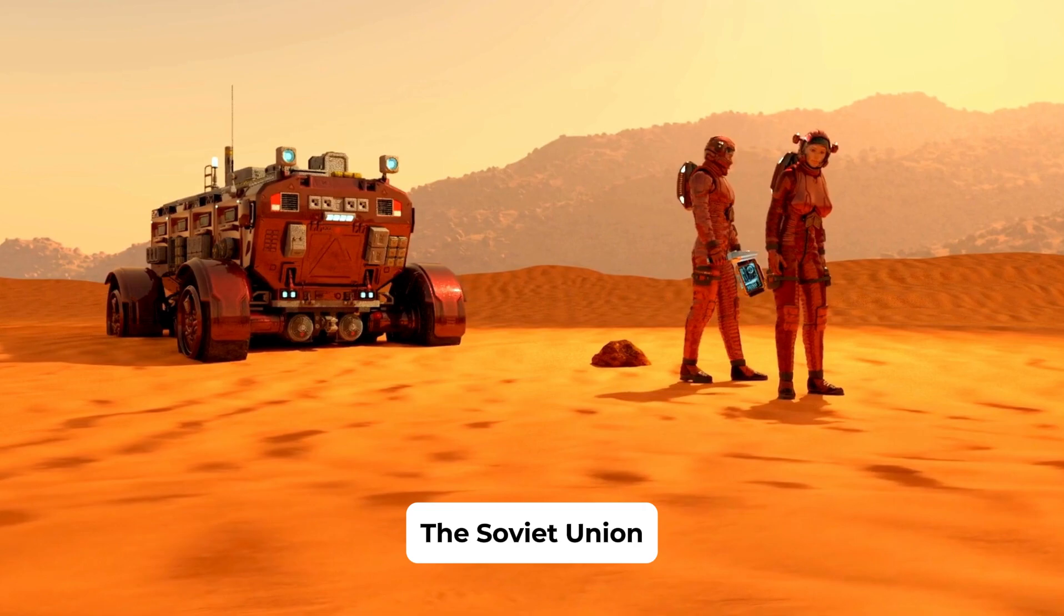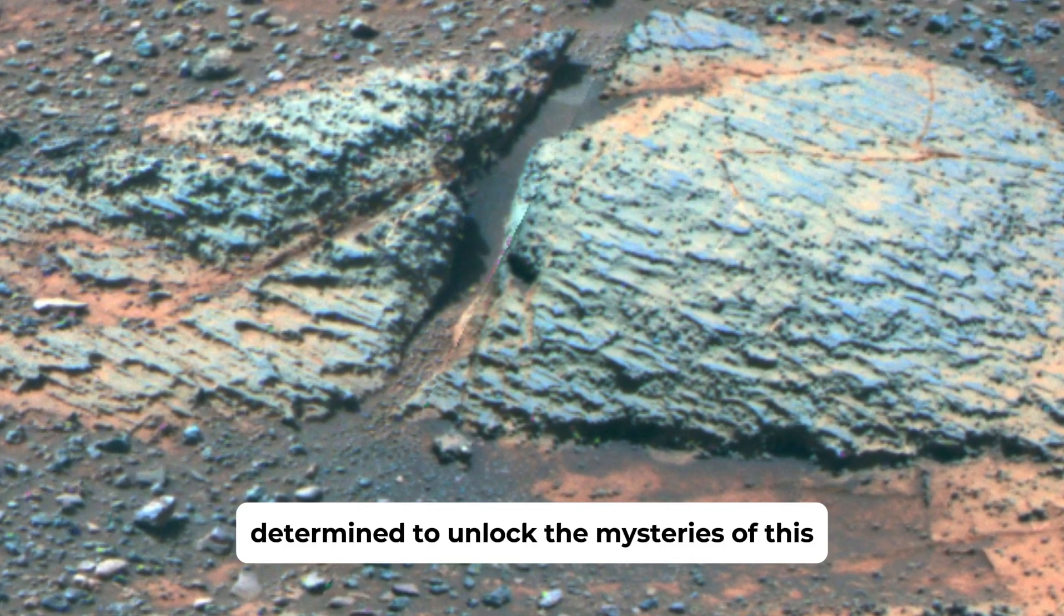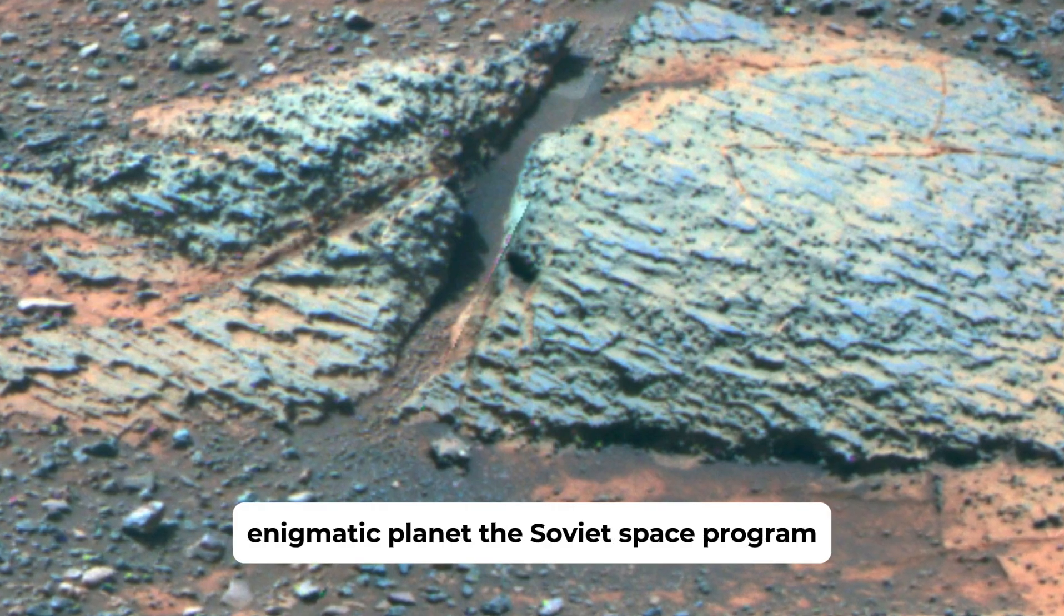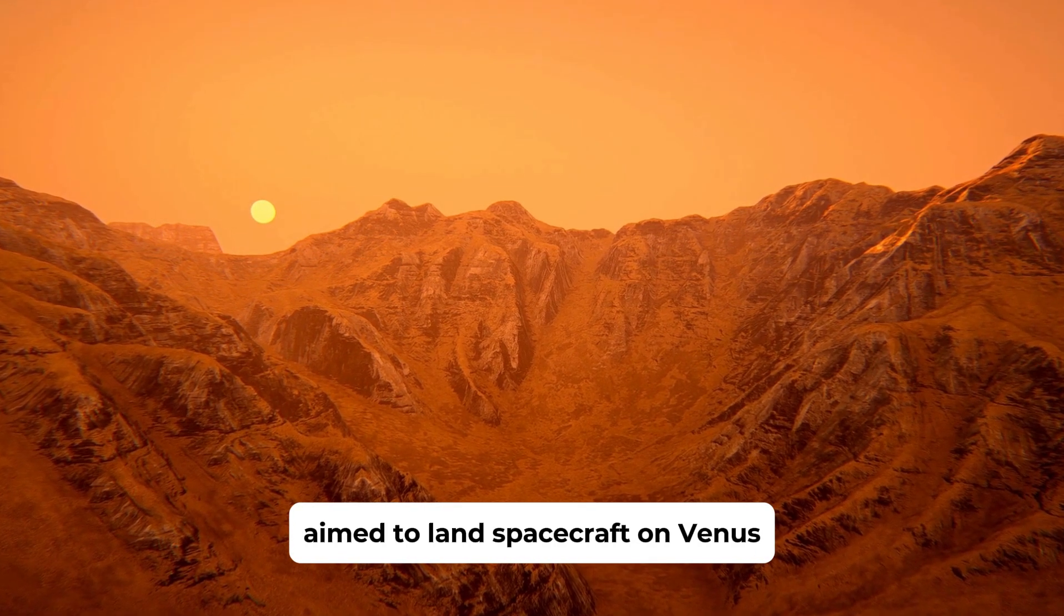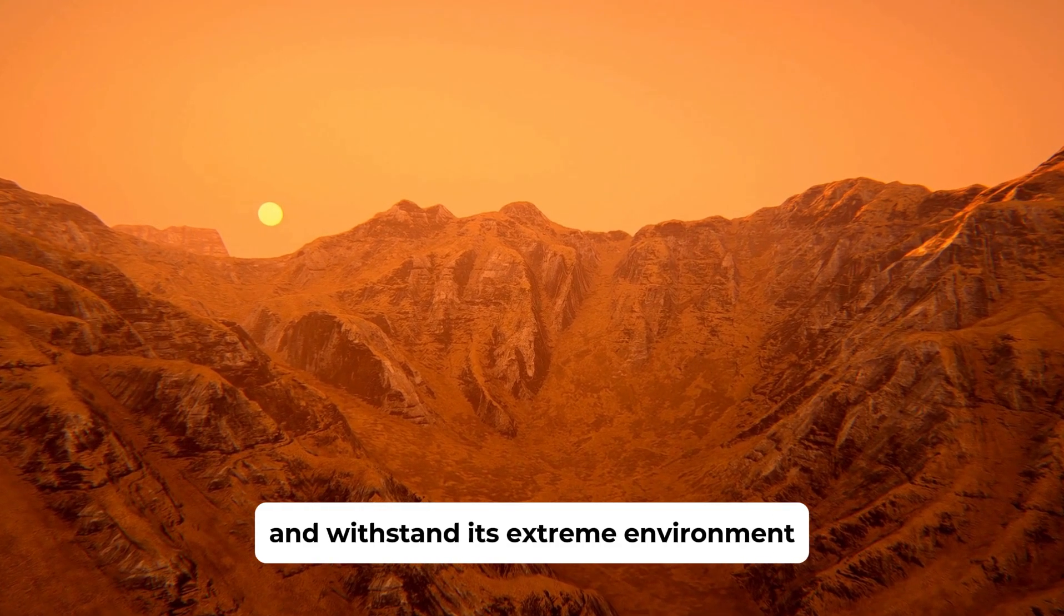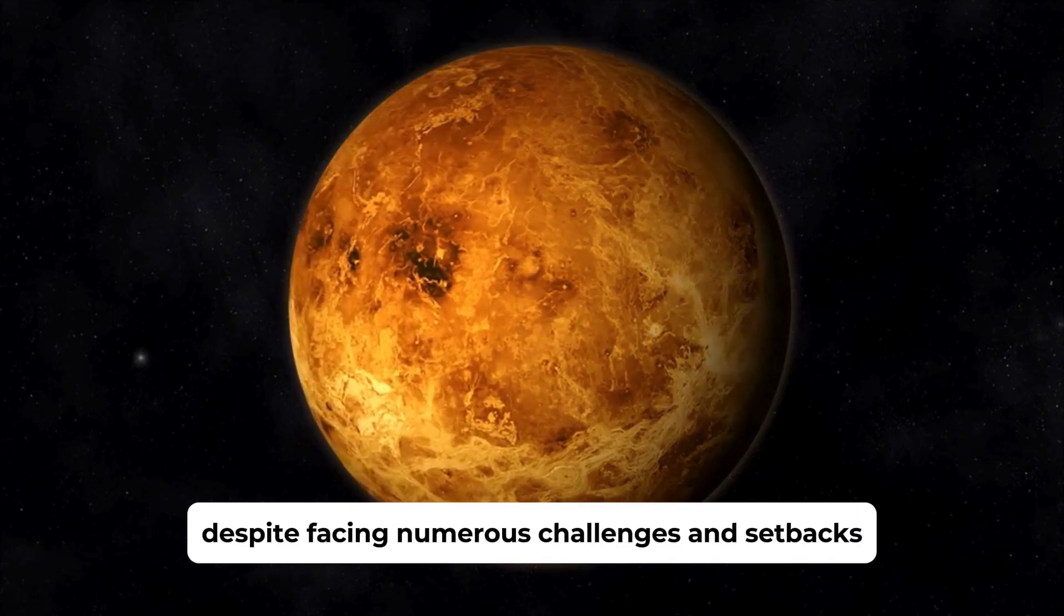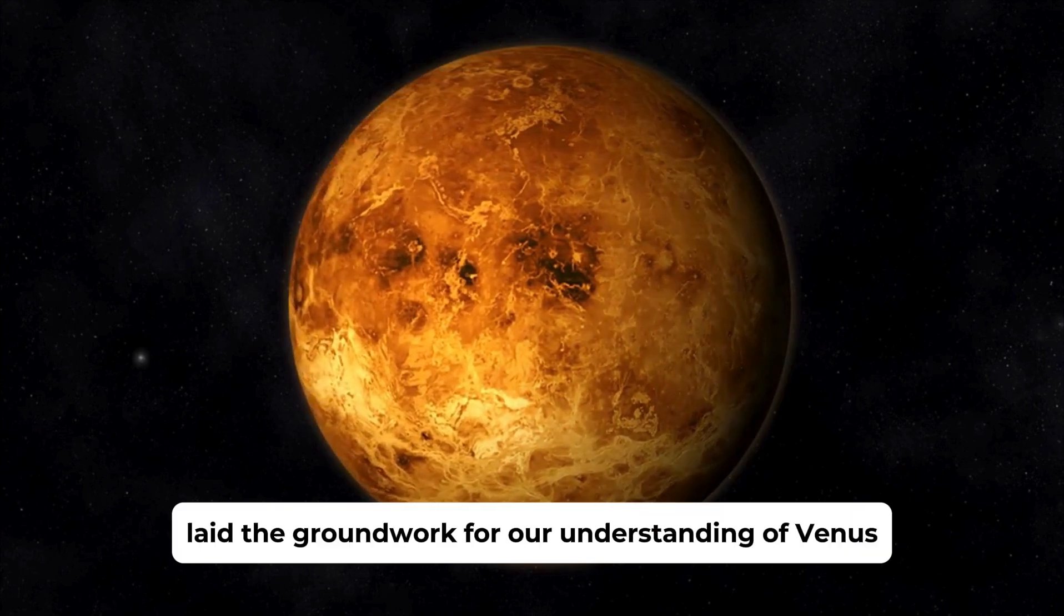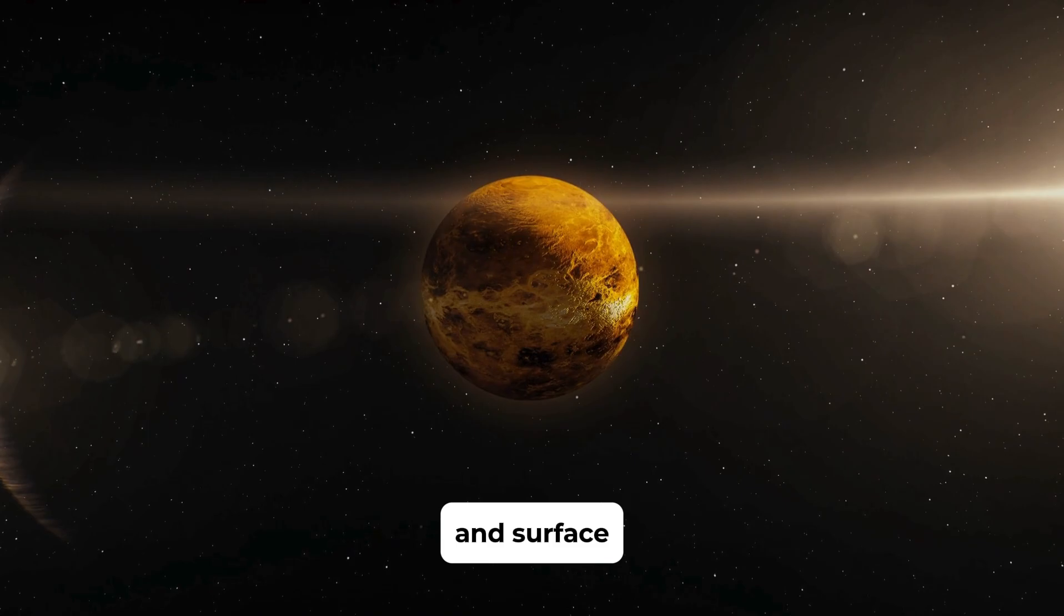The Soviet Union embarked on its journey to explore Venus in the early 1960s, determined to unlock the mysteries of this enigmatic planet. The Soviet space program, particularly the Venera program, aimed to land spacecraft on Venus and withstand its extreme environment. Despite facing numerous challenges and setbacks, these missions laid the groundwork for our understanding of Venus and provided crucial insights into its atmosphere and surface.